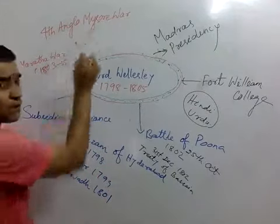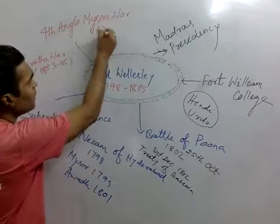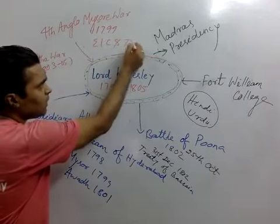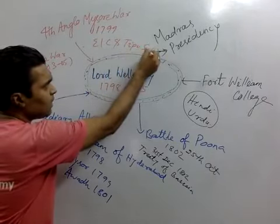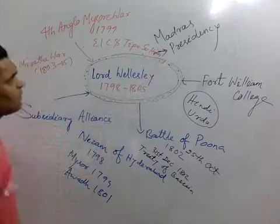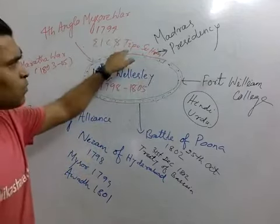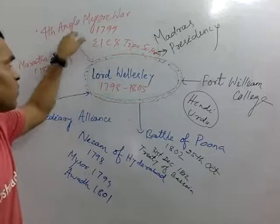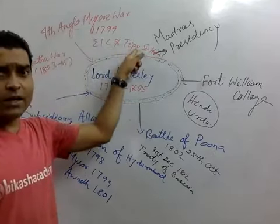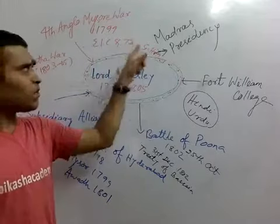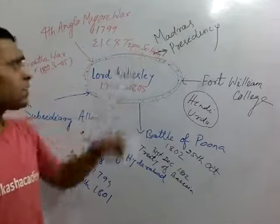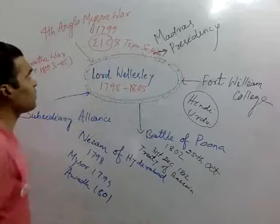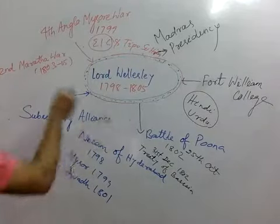Now we'll talk about the Fourth Anglo-Mysore War. The Fourth Anglo-Mysore War was fought in 1799 between the East India Company and Tipu Sultan. In this war, Tipu Sultan died. Hyder Ali was the father of Tipu Sultan. The East India Company was victorious in this war.